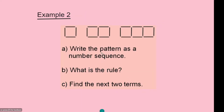Now we have another set of questions — this time we have a pattern. In question A, we are asked to write the pattern as a number sequence. In the first pattern we have four sticks, so the sequence begins with 4. The next pattern has seven sticks, and the third pattern has ten sticks. So the sequence is 4, 7, 10.